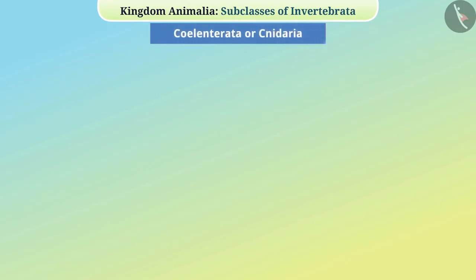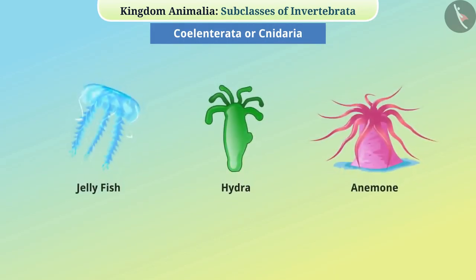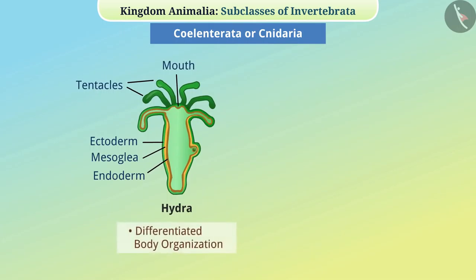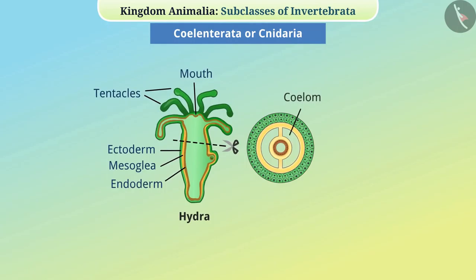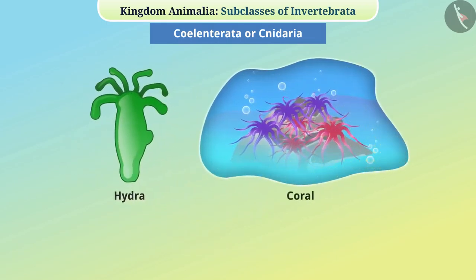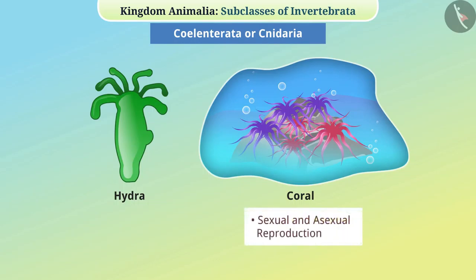Coelentrata or Cnidaria: These include organisms like hydra, jellyfish, anemone, etc. They are all multicellular aquatic animals and their body organization is at the tissue level — more differentiated than that of Porifera. There is a coelom in their body. Their body is made up of two cell layers — outer skin (ectoderm) and inner skin (endoderm) — and hence they are diploblastic. The space between the two layers is filled with a jelly-like substance called mesoglea. Some species such as corals live in groups while some, like hydra, remain alone. They can reproduce both sexually and asexually.